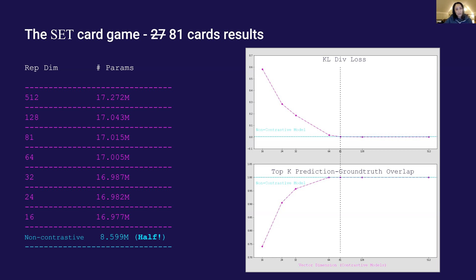Notice that the game has 81 cards. So in theory, with a vector dimension of 81 or above, we should be able to solve this game perfectly. And we do see some agreeing trends here.